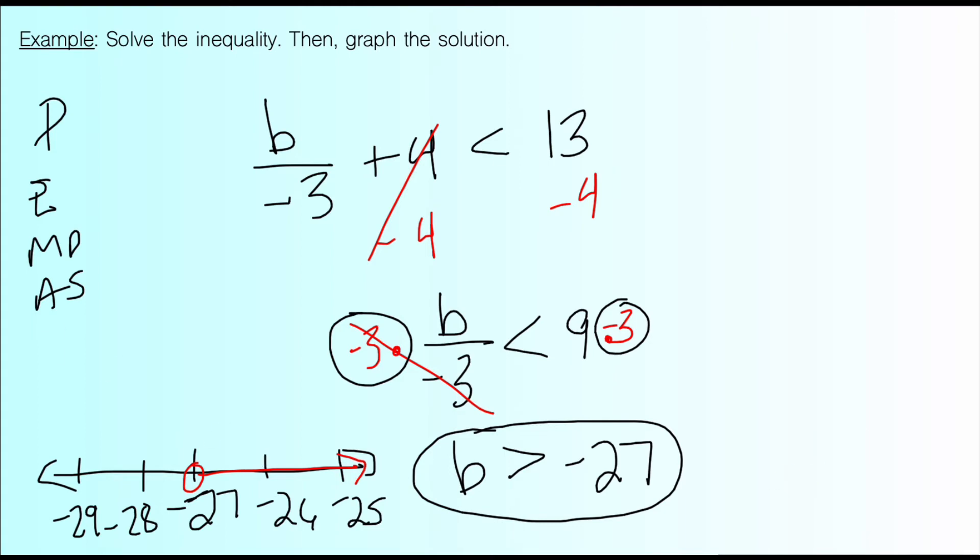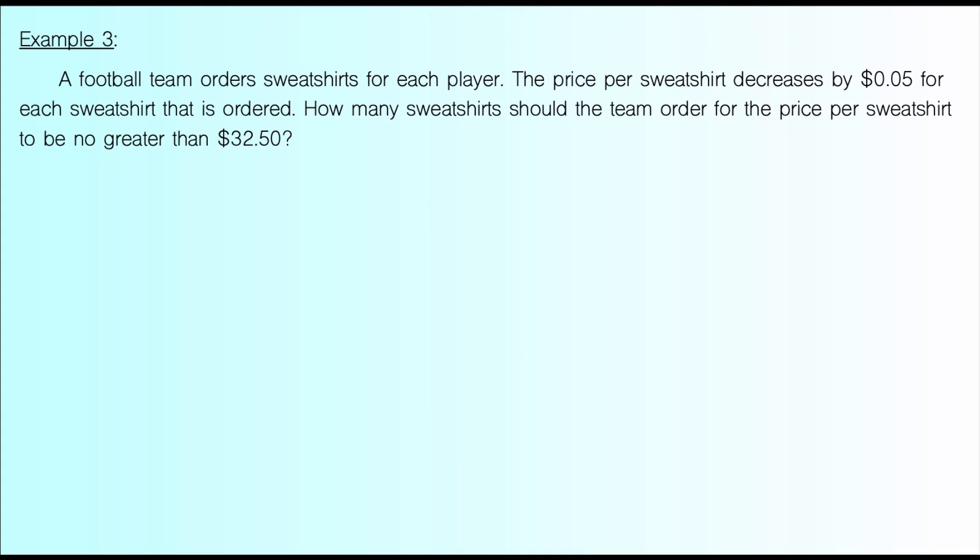The last one we're going to look at today is a word problem. It's always good to look at at least one word problem example. And for this one, we're talking about a football team that ordered sweatshirts for the players on the team. And when they ordered, the price per sweatshirt decreased by 5 cents for each sweatshirt that you order. So the more that you order, the bigger discount you get on the price of the sweatshirts. So the question is, how many sweatshirts should the team order for the price per sweatshirt to be no greater than $32.50?